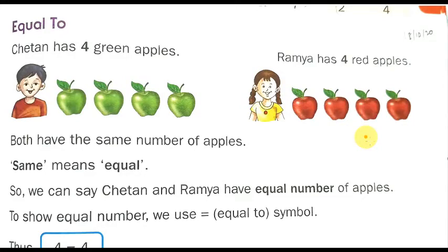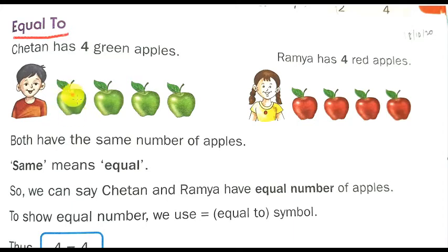Good morning children. Today I am going to discuss about the equal sign. So Chetan has four green apples — see here, one, two, three, four green apples. And Ramya has four red apples.